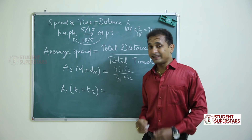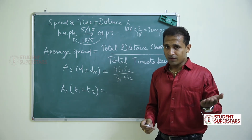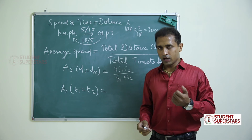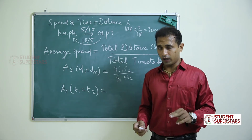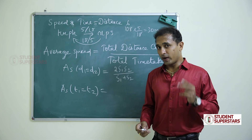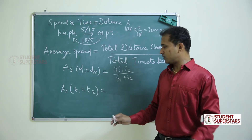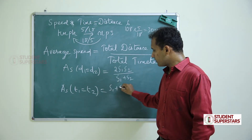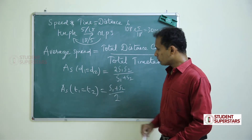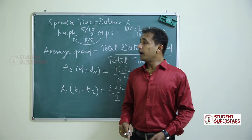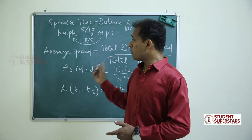Next is average speed when the times are the same. When the times are equal, average speed is simply (s1 + s2) ÷ 2. These are the key concepts of problems on time and distance — remember all these formulas.